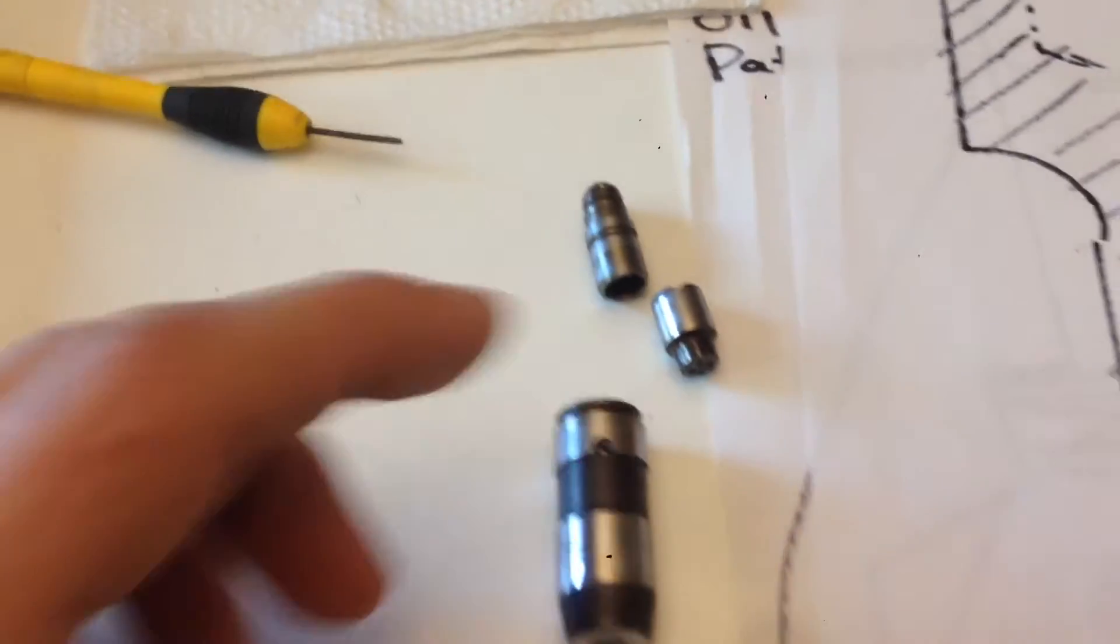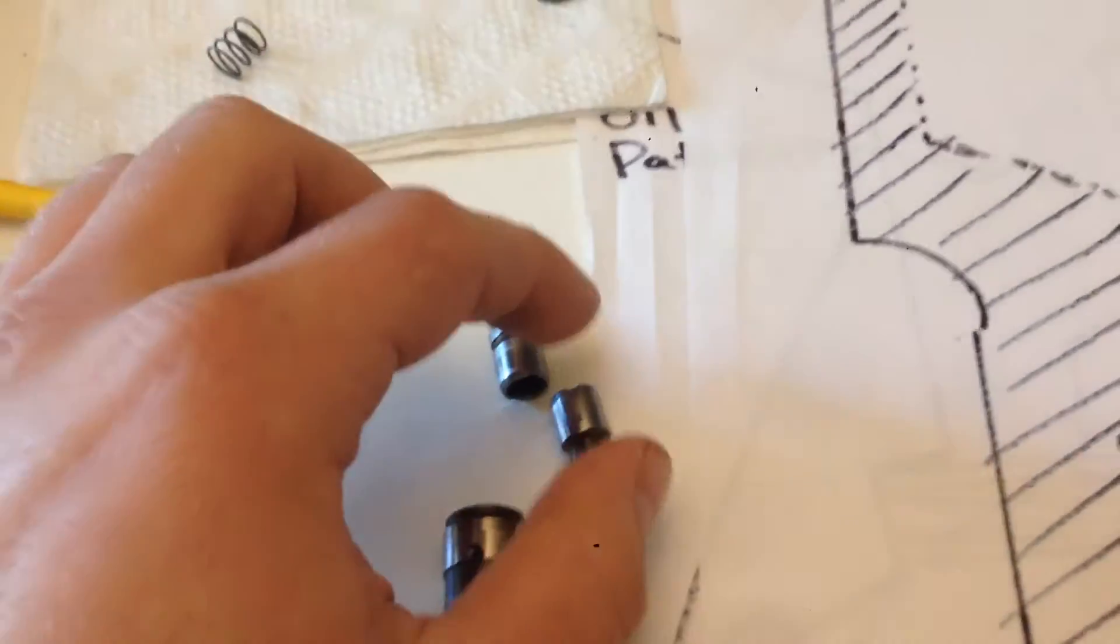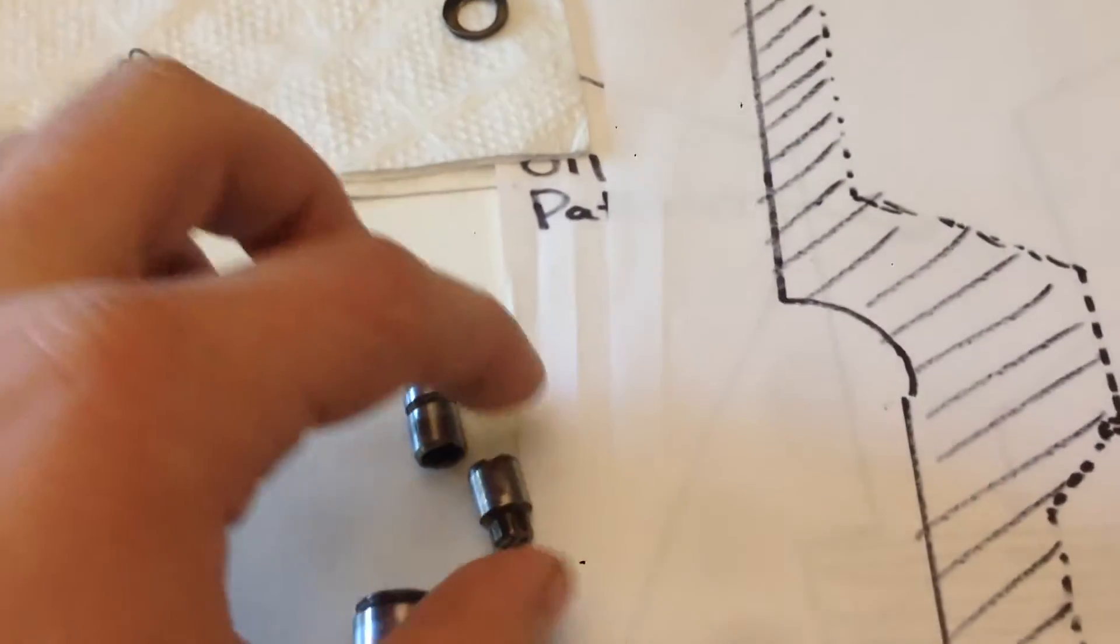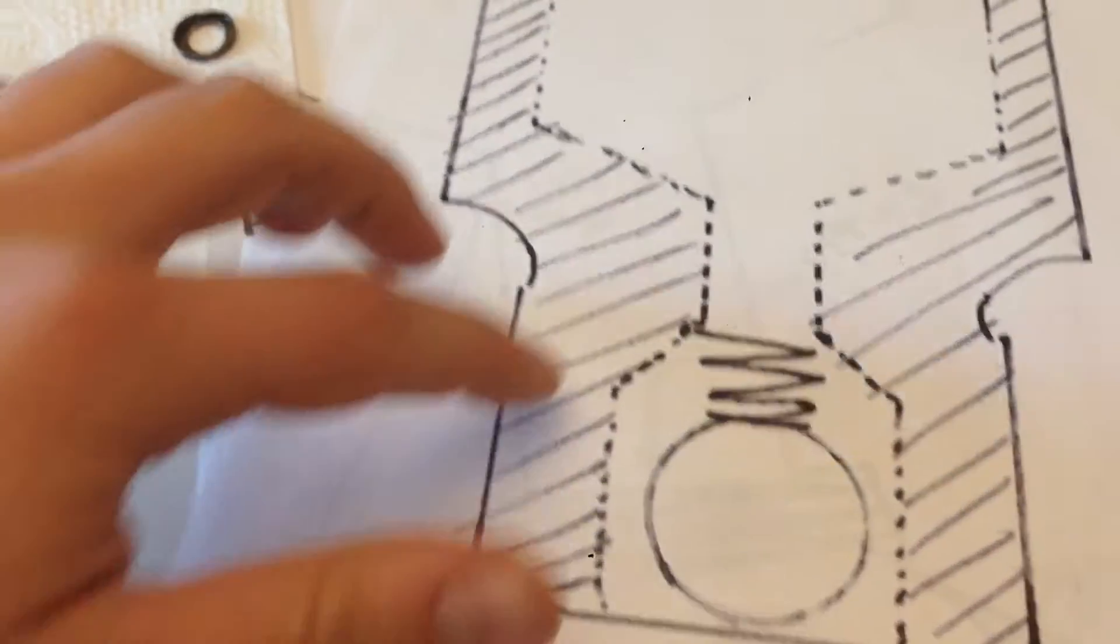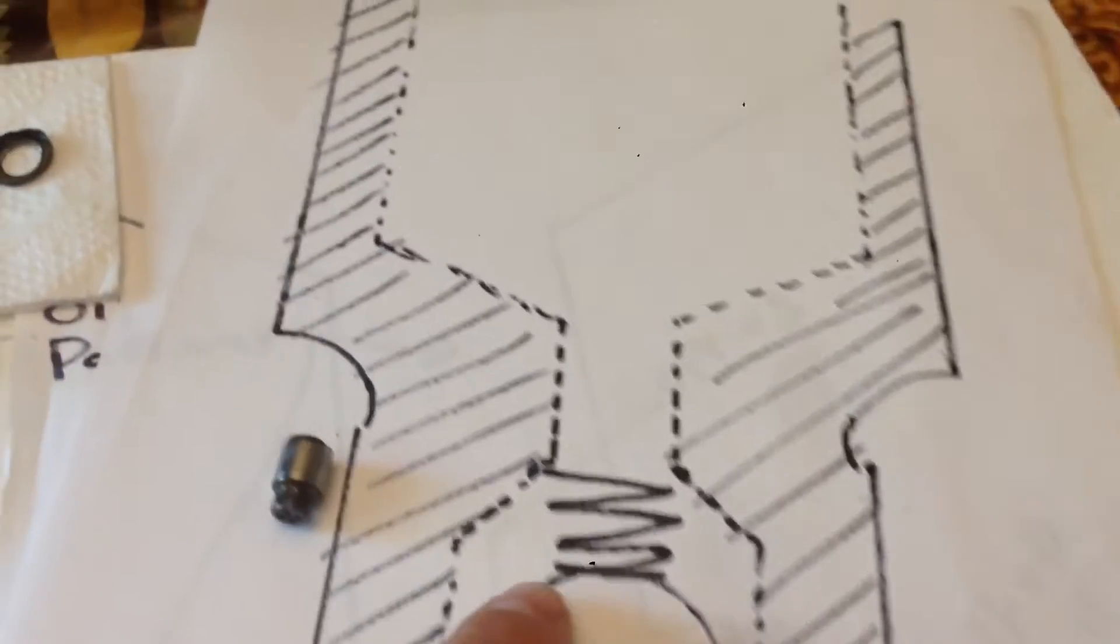There's the bottom piston. Those go inside the main body, and this cross section is actually a drawing of this piece with the check ball in it. What happens is this is all solid steel here—all the crosshatched pieces. Then you've got your check ball, your spring, and the oil.